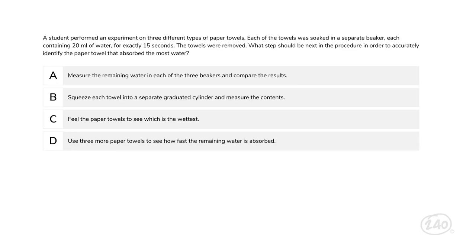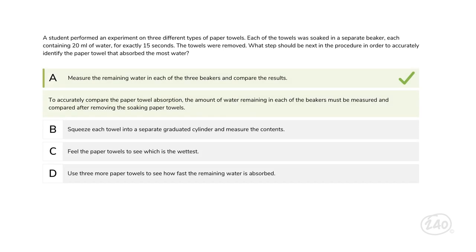Here's a question on the scientific method. A student performed an experiment on three different types of paper towels. Each towel was soaked in a separate beaker containing 20 milliliters of water for exactly 15 seconds, then the towels were removed. What step should be next to accurately identify the paper towel that absorbed the most water? There is only one answer that gives us a measurable difference — Choice A is correct: the amount of water remaining in each beaker must be measured and compared after removing the soaking paper towels.